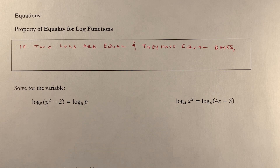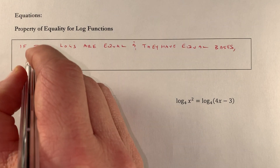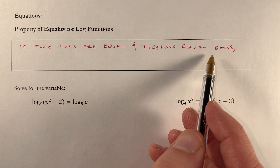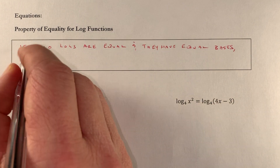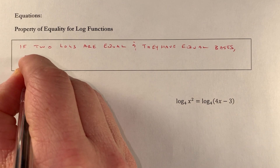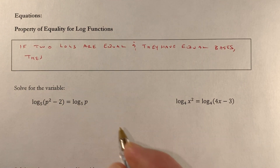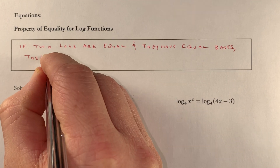Both of them have a base 5. So if the two logs are equal and they have equal bases, then the arguments are equal.